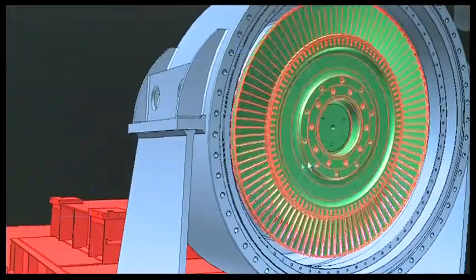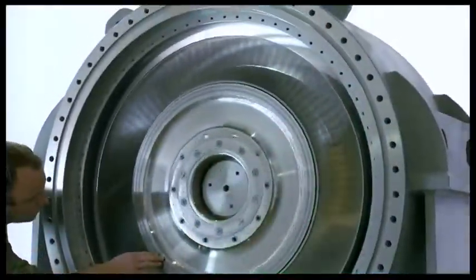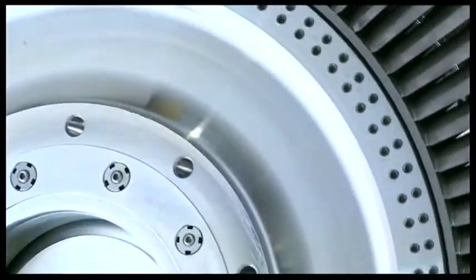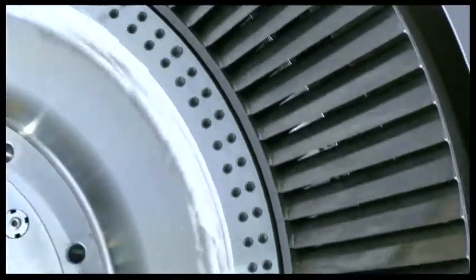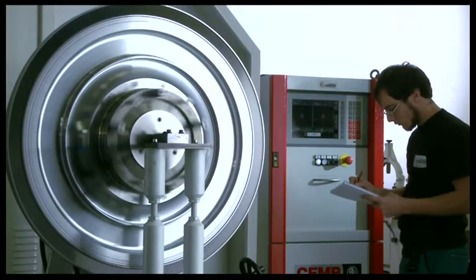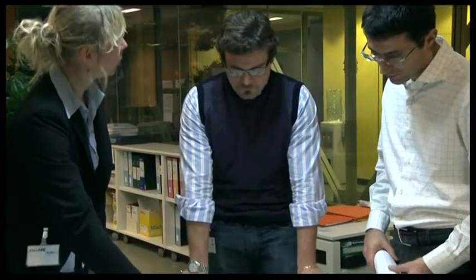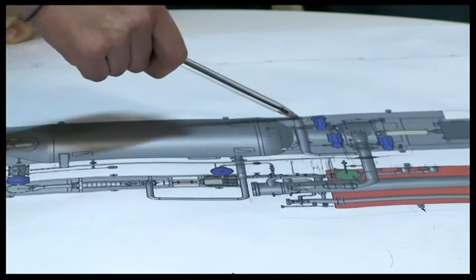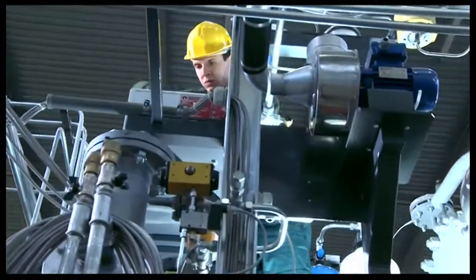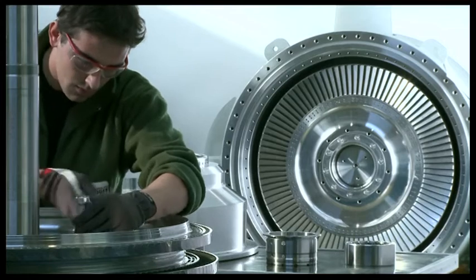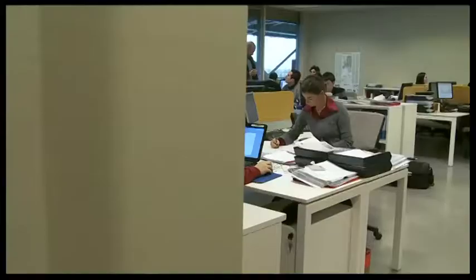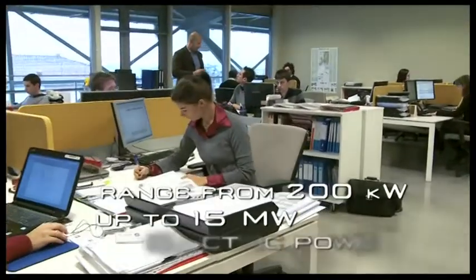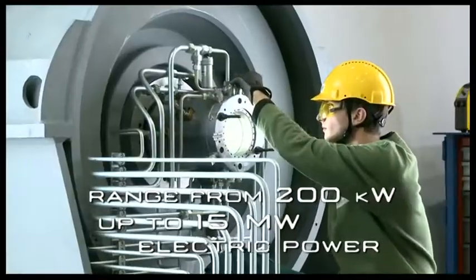At the heart of Turboden's ORC technology there is the turbine. Water vapor found in traditional models is replaced with a specific organic working fluid with a high molecular mass. The specific working fluid makes it possible to fully exploit heat sources even at lower temperatures to produce electricity in a range from 200 kilowatts up to 15 megawatts electric power.